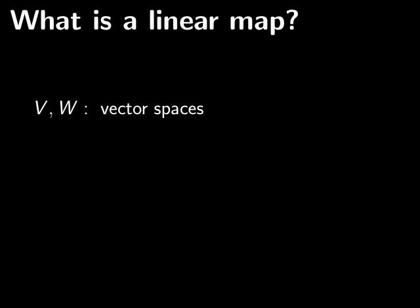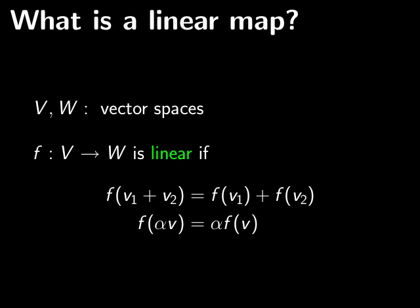Recall what a linear map is. We're going to start with some vector spaces, vector space V, vector space W. And a function F from V to W is linear if it respects the structure of the objects. That is, F takes sums to sums and scalar multiplication to scalar multiplication.